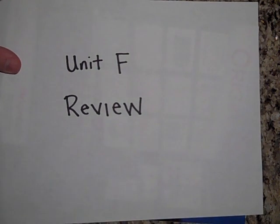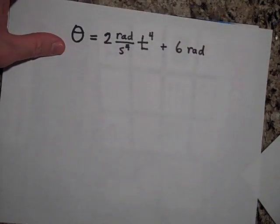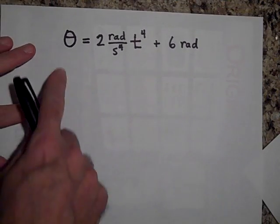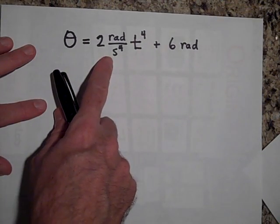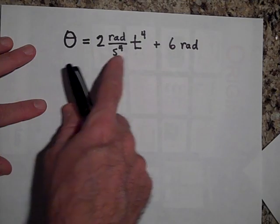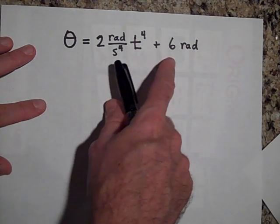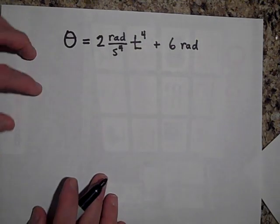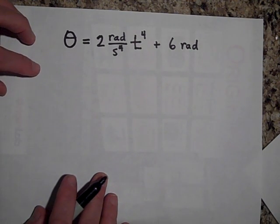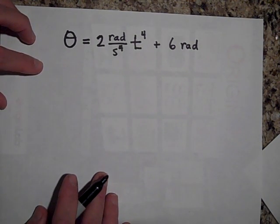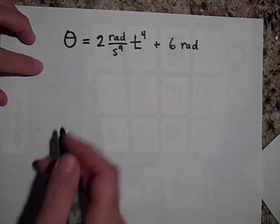We're going to begin a review of unit F, rotational motion. If you have a function for theta that's two radians per second to the fourth power times t to the fourth plus six radians, what will be the expression for omega? Go ahead and pause and try to find the expression for omega.